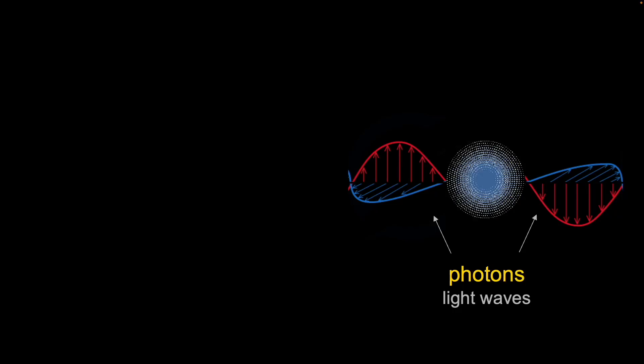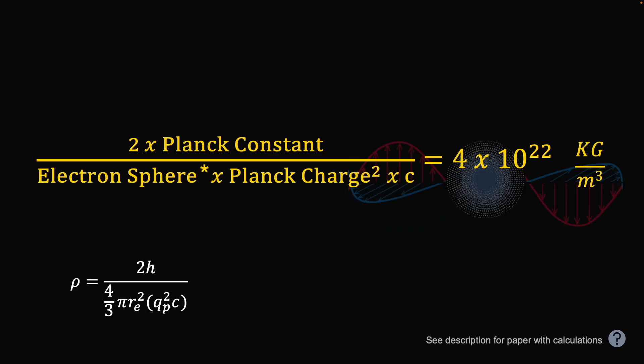The third method will use photons, light waves. Right here is a picture of an electron with two photons, because the electron is generally the one to produce photons as it changes energy levels in an atom. Now math-wise, this one's a little bit more complex. It's the Planck constant, which shows up in photon equations. Now again, no surprise. Divide it by the same modified electron sphere as the previous one, but now two other constants, Planck charge squared and the speed of light. But again, you get the same number, 4 times 10 to the 22nd.